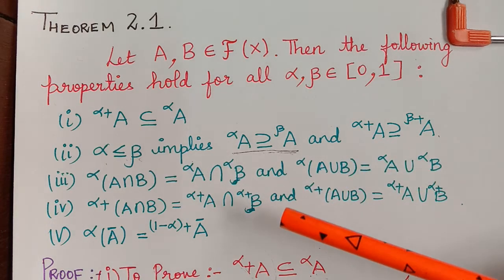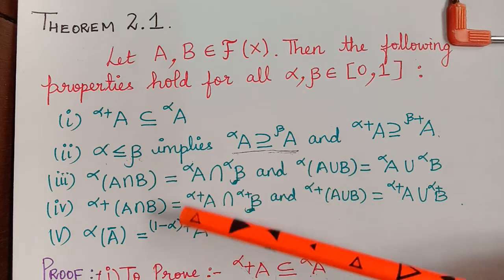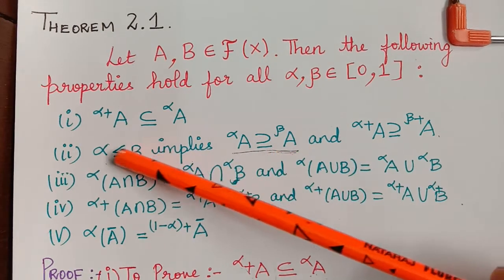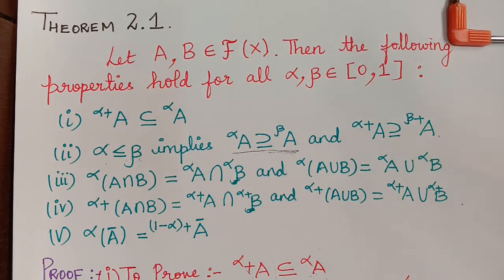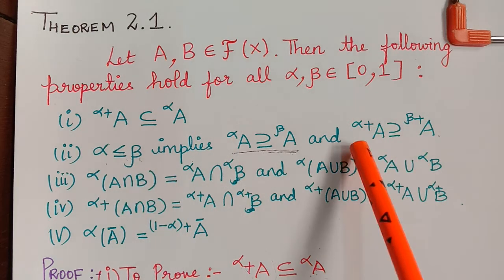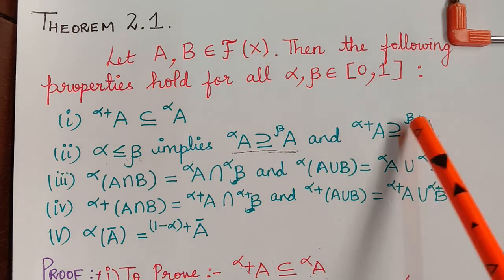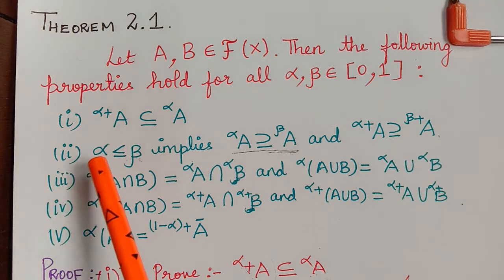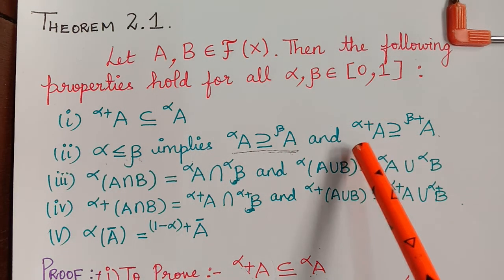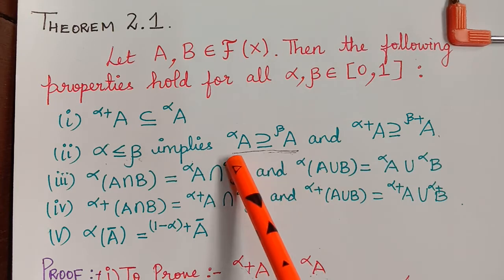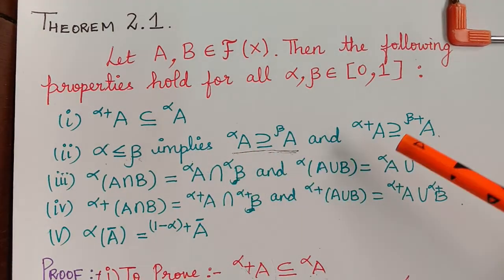Hello students, this is the continuation of our previous video where we are learning about the properties of alpha cut. We have already proved subdivision 1 and subdivision 2. Now subdivision 2 has a second part which we will be proving now. The second part says that if alpha is lesser than or equal to beta, the strong alpha cut of A will contain the strong beta cut of A. We have already proved it for alpha cut and beta cut. Now we will be proving for strong alpha cut and strong beta cut.